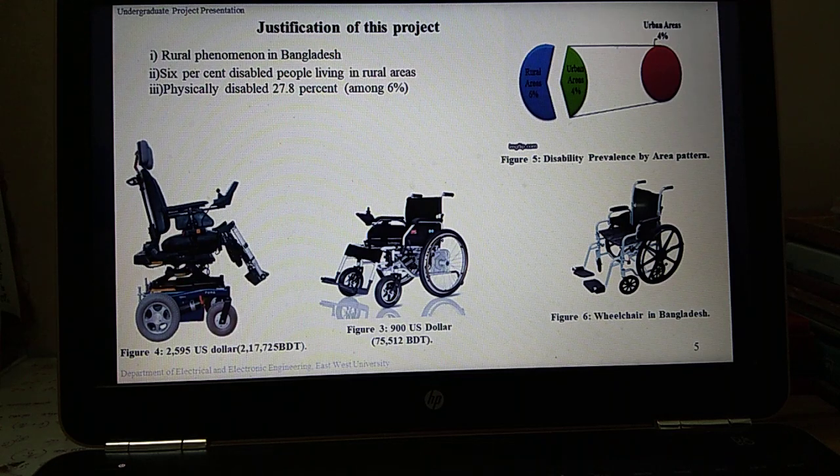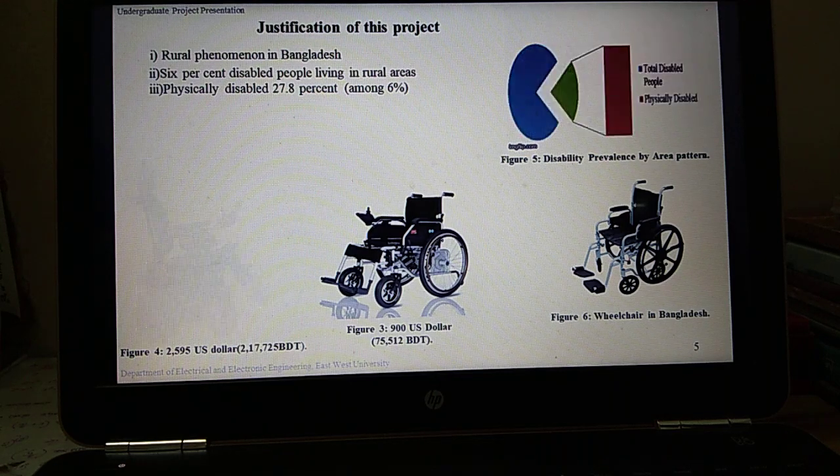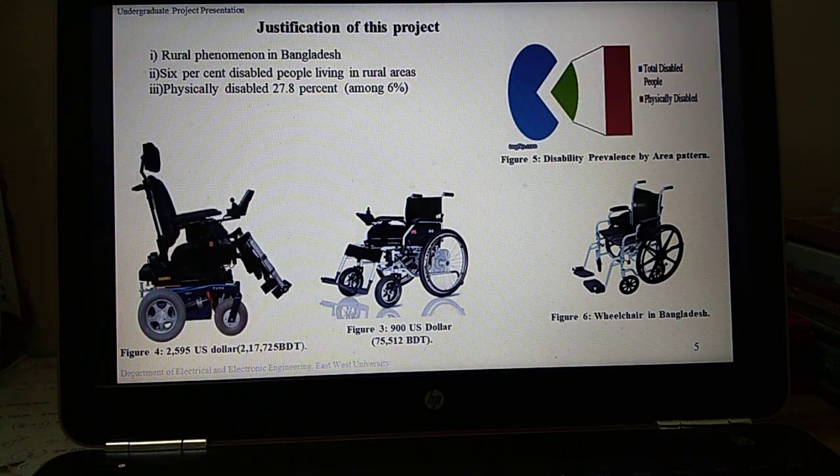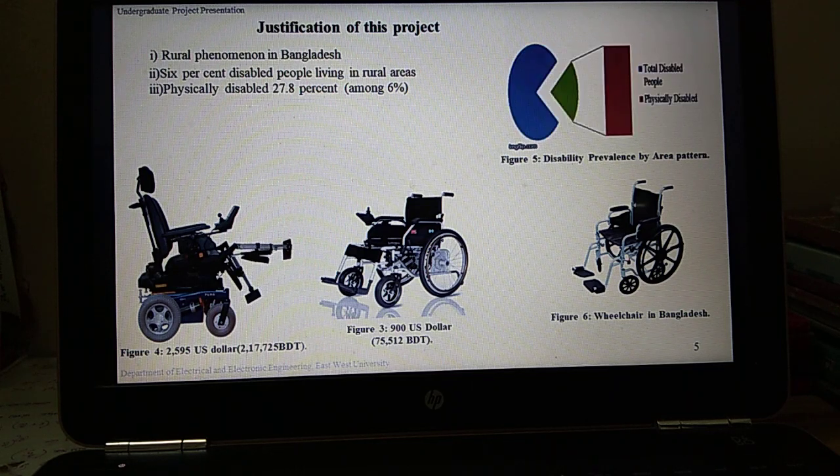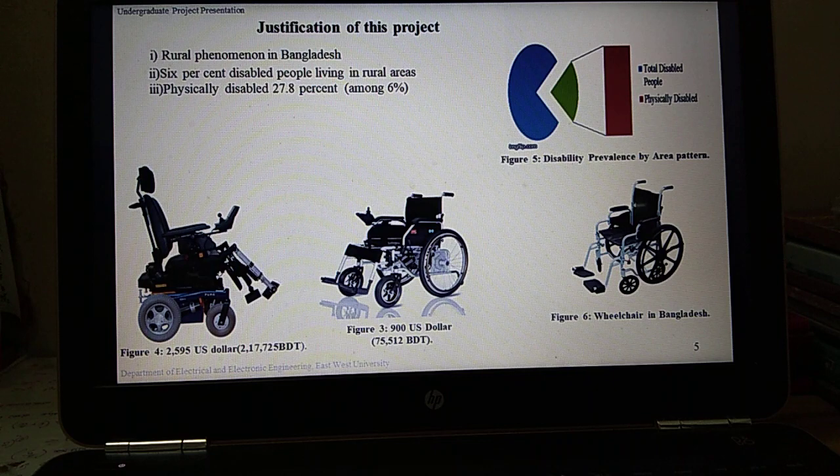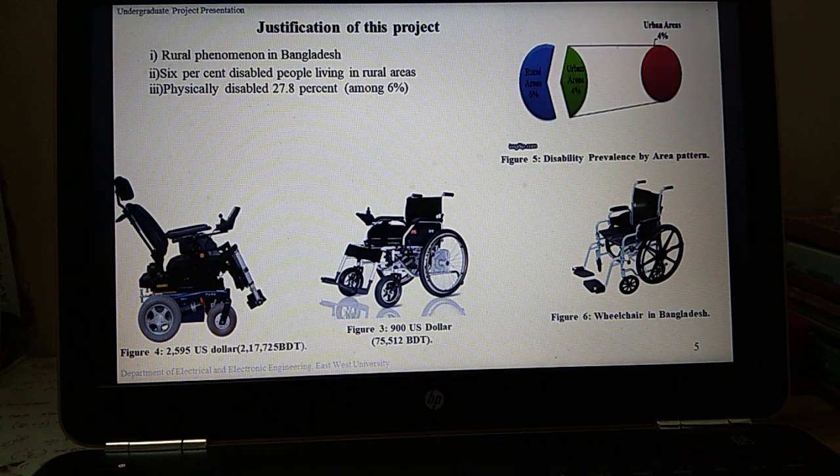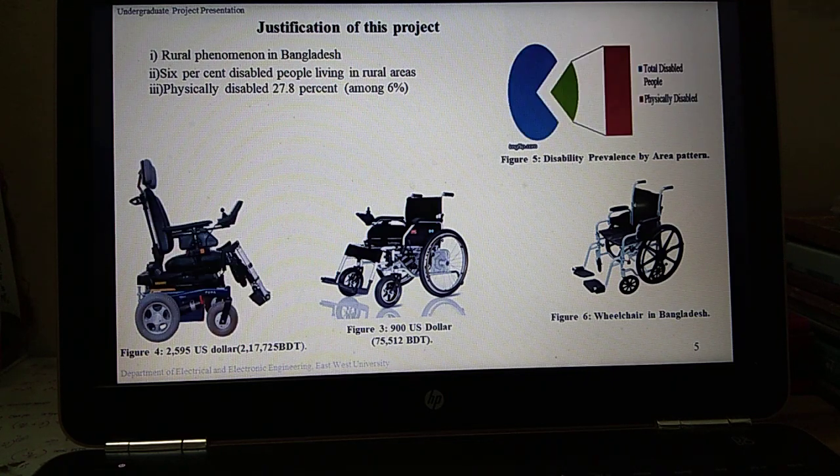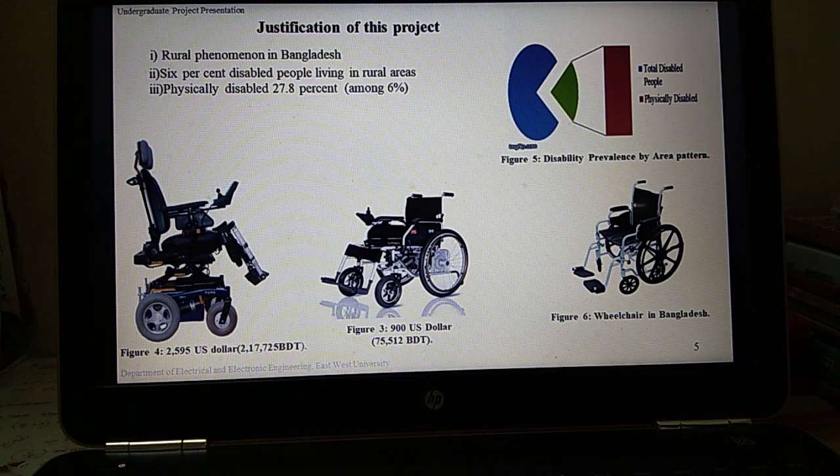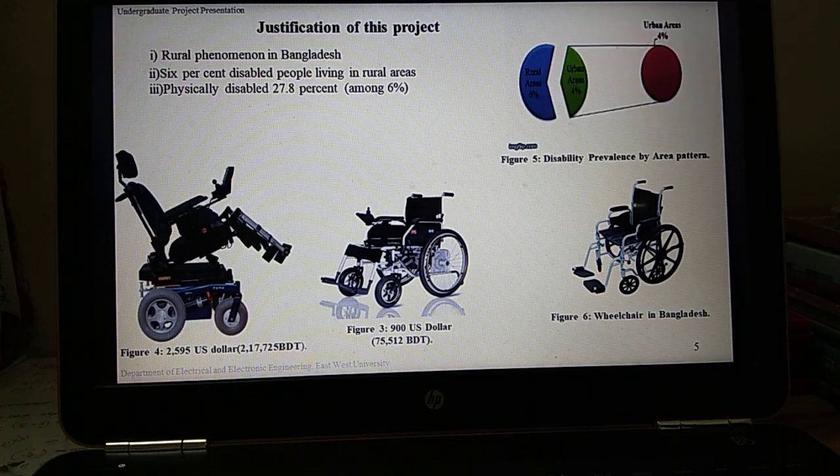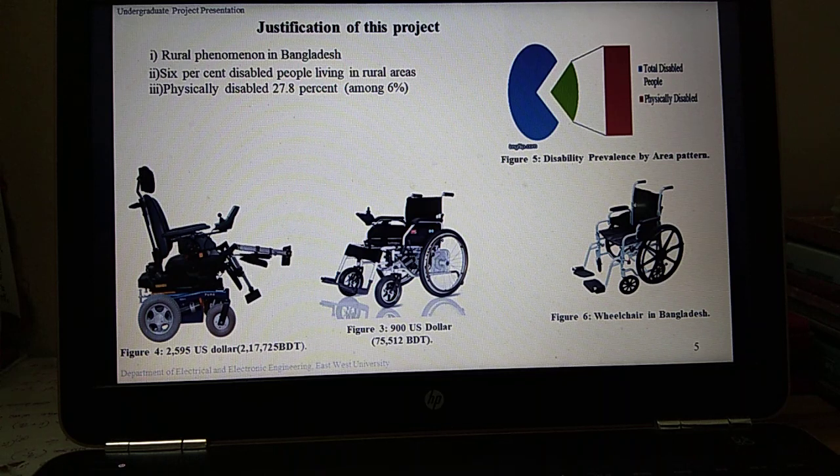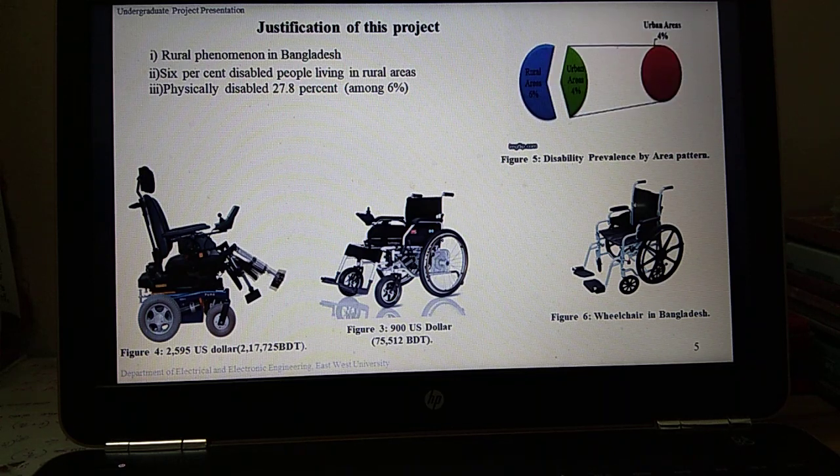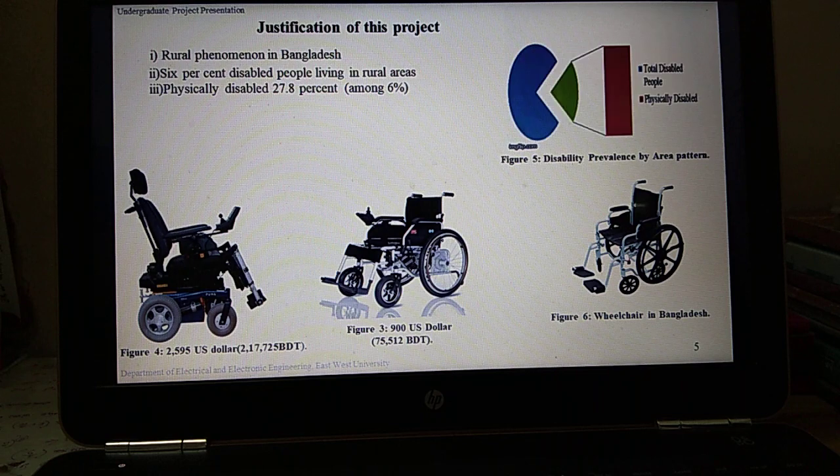We know that Bangladesh is one of the least developed countries and an estimated 63 million people live under the poverty line in a country of 163 million people. Disability is primarily a rural phenomenon in Bangladesh. Six percent of people living in rural areas suffer from disability in comparison to four percent of those living in urban areas. Among these six percent, 27.8 percent people are physically disabled.